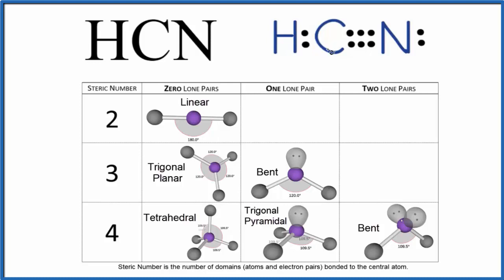So we can see that the central carbon is bonded to hydrogen and then it's bonded to the nitrogen there. So it's bonded to two things. That's its steric number and there aren't any lone pairs, any unbonded electrons around the carbon. Zero lone pairs.